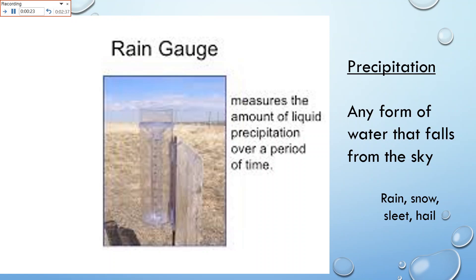Remember, precipitation is any form of water that falls from the sky, a.k.a. rain, snow, sleet, and hail.